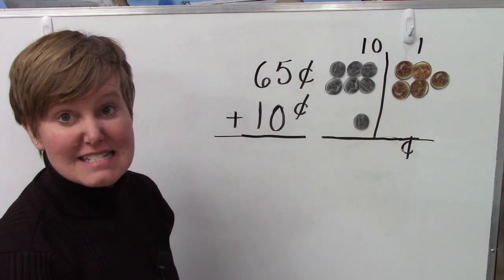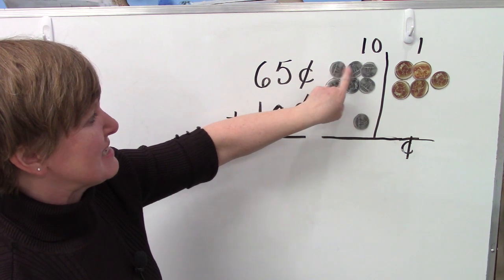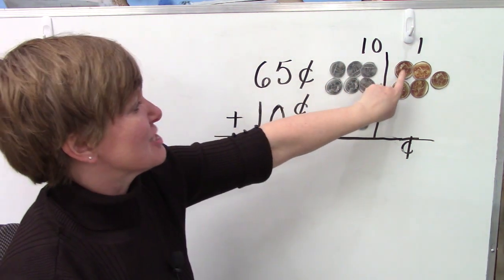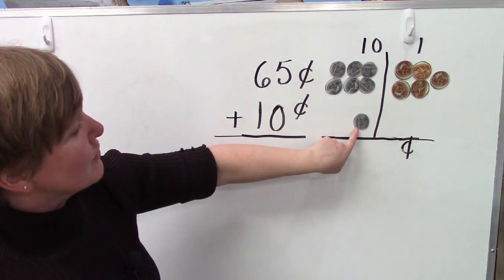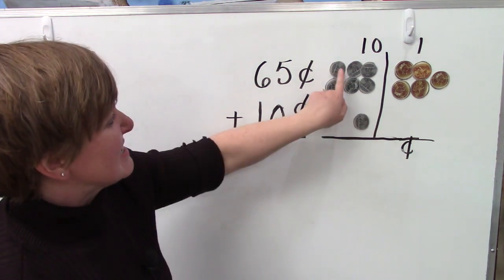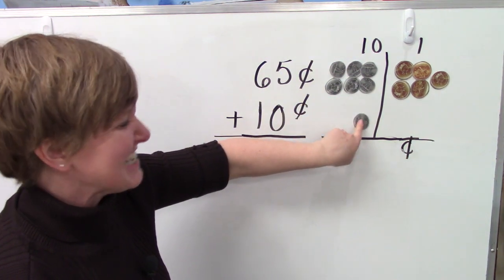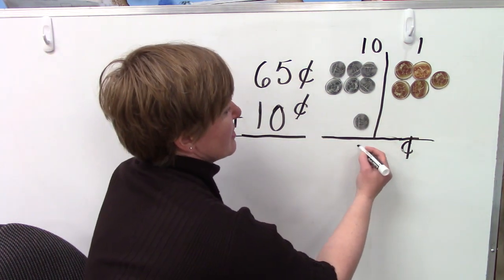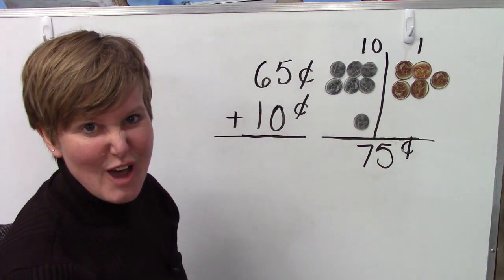Here we're adding 65 plus 10. We have 6 dimes. 10, 20, 30, 40, 50, 60. 61, 62, 63, 64, 65. And we're going to be adding 10 cents to 65. Let's try counting. 10, 20, 30, 40, 50, 60, 70. 71, 72, 73, 74, 75. 65 plus 10 is 75.